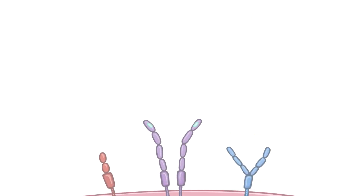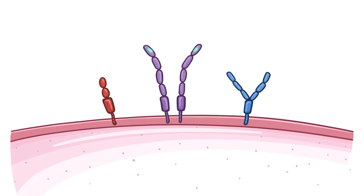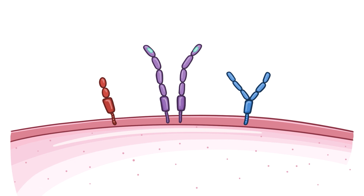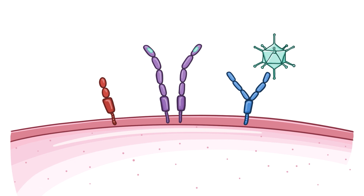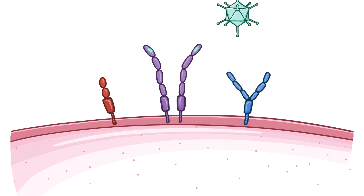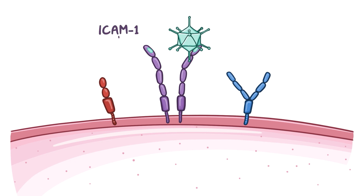Once rhinovirus has been introduced to the respiratory mucosa, it targets cell surface receptors expressed at the surface of nasal epithelial cells. Rhinoviruses can target a few specific receptors for entry, but one in particular is intercellular adhesion molecule 1, or ICAM1.